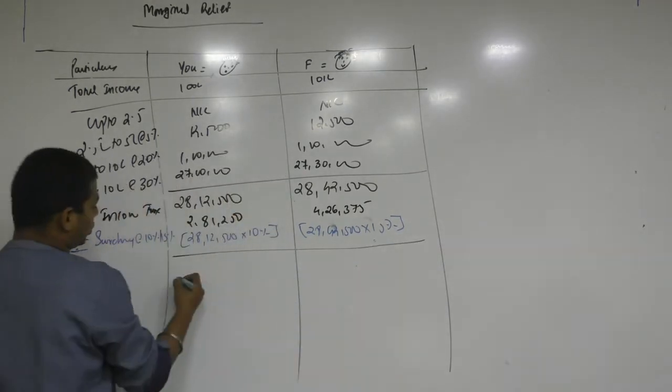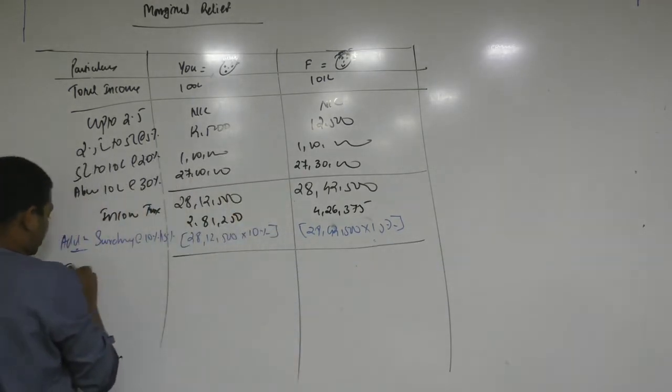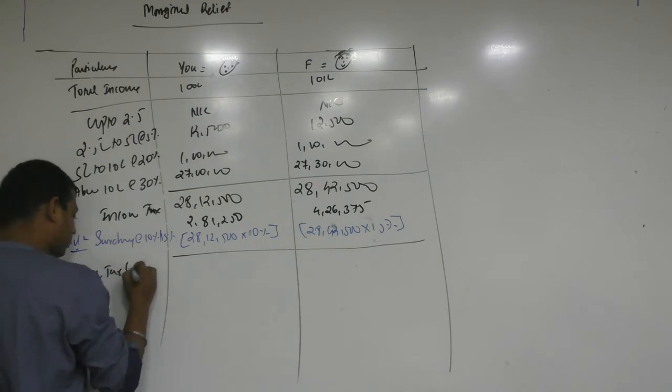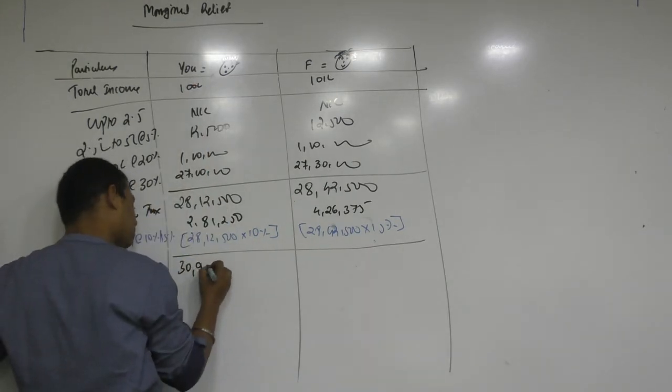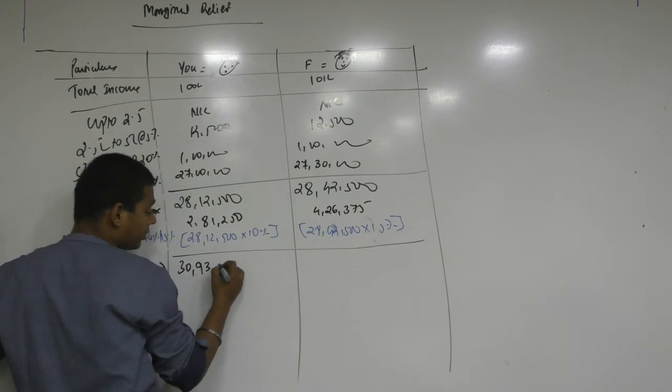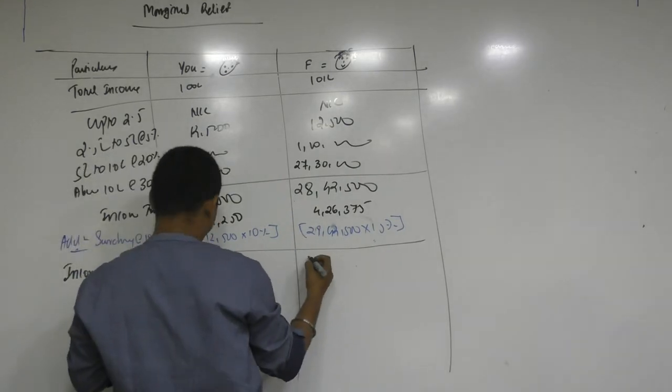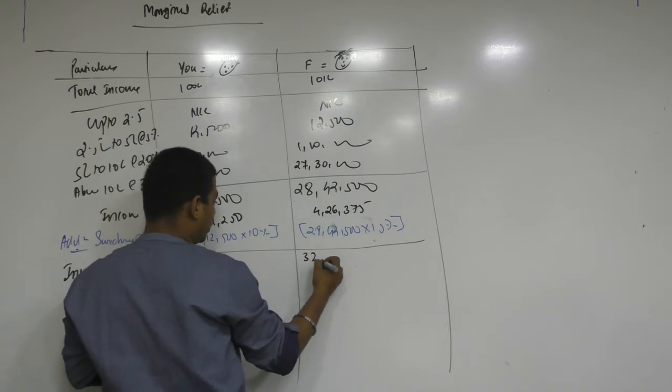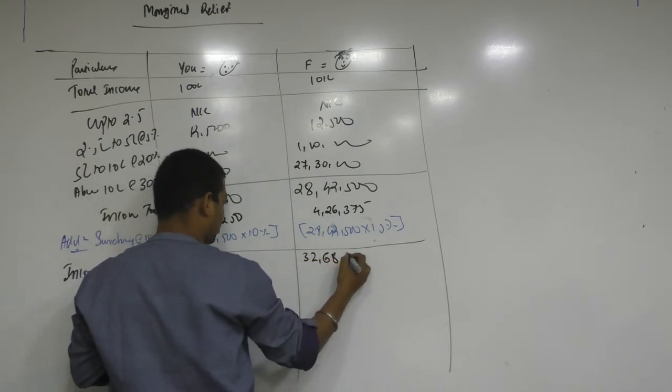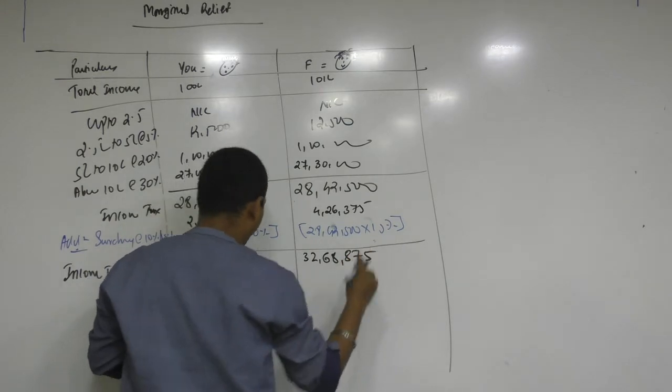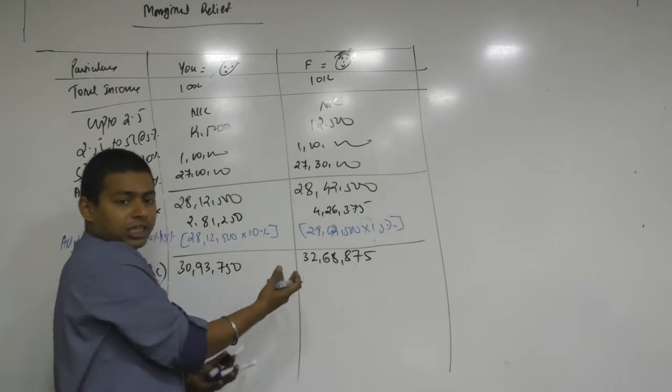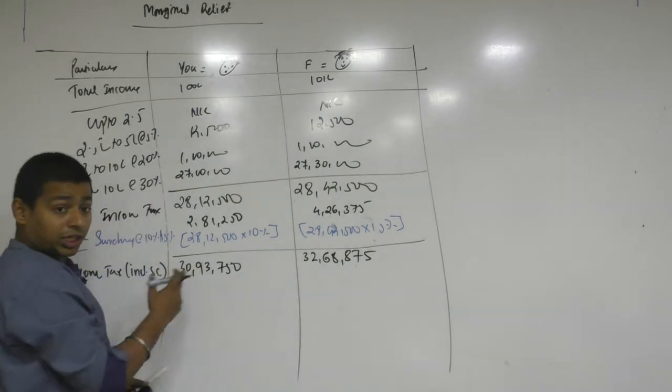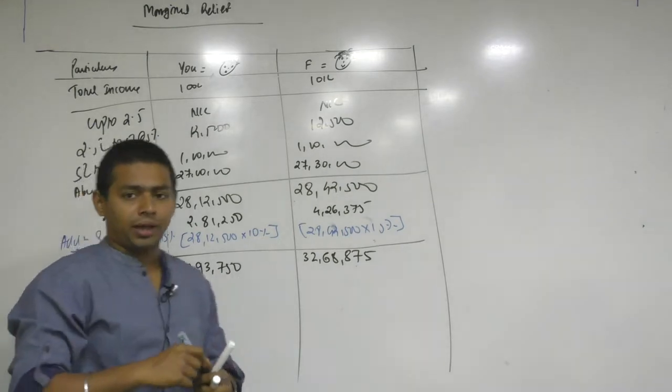Okay. So the total here is what we call income tax including surcharge. Including surcharge. So what is this number? 30 lakh 93,750, 32 lakh 68,875. Now hold here. Hold here. Here the moment we reach this figure, income tax including surcharge. You need to apply, in costing Sandesh sir will teach you. There is a method called differential method.